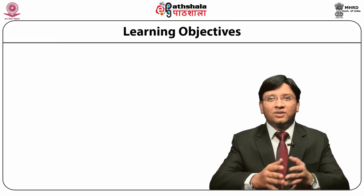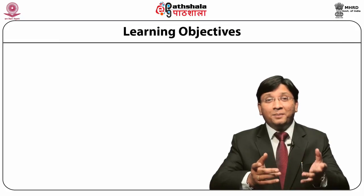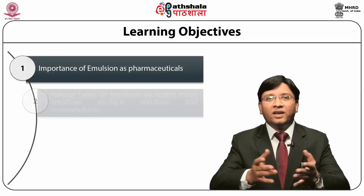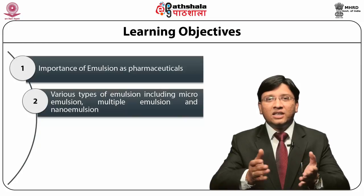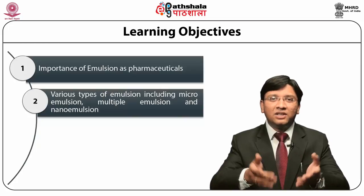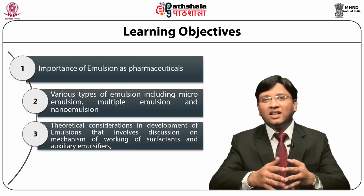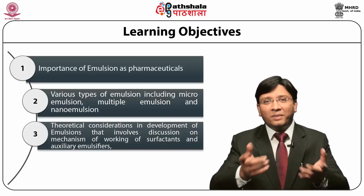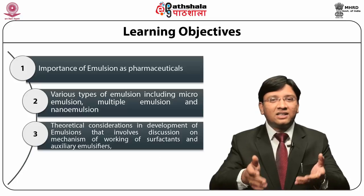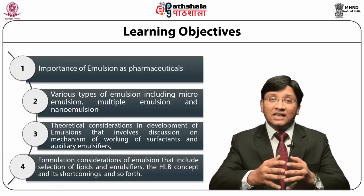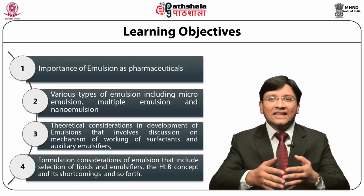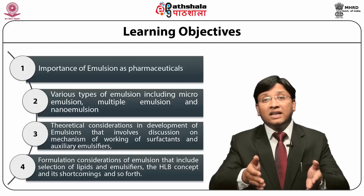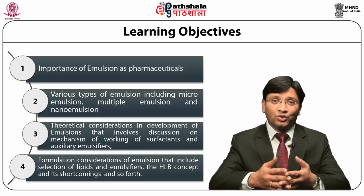The learning objectives of the current module include a basic understanding of the importance of emulsions as pharmaceuticals, various types of emulsions including micro emulsion, multiple emulsion and nano emulsion, theoretical consideration and development of emulsion involving discussion on mechanism of working of surfactants and auxiliary emulsifiers, formulation consideration including selection of lipids and emulsifiers, the HLB concept and its shortcomings.